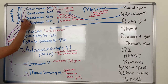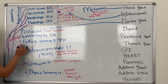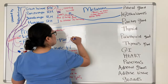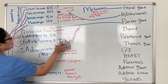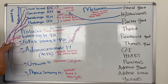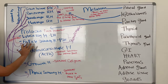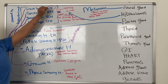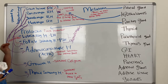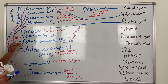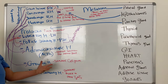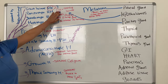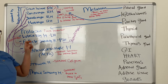Gonadotropin releasing hormone comes down and tells the luteinizing and follicle stimulating hormones to release — these two are also known as gonadotropins. So your gonadotropins are LH and FSH, and they relate to reproduction. The relationship between the hypothalamus releasing hormones and the pituitary gland: relate releasing hormones with the hypothalamus, and relate stimulating hormones with the pituitary gland.